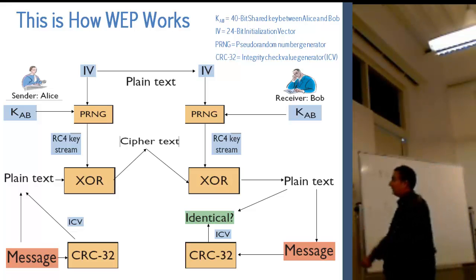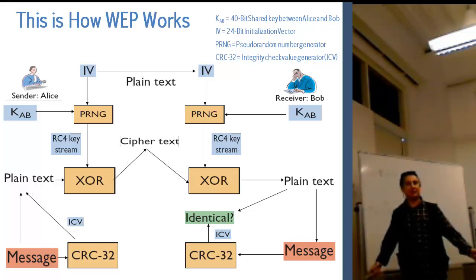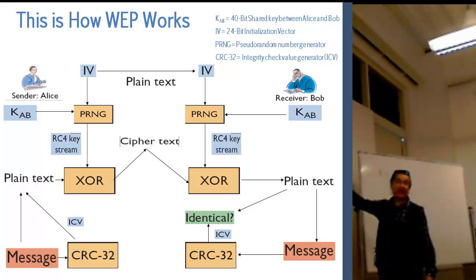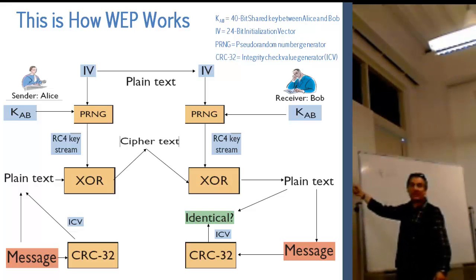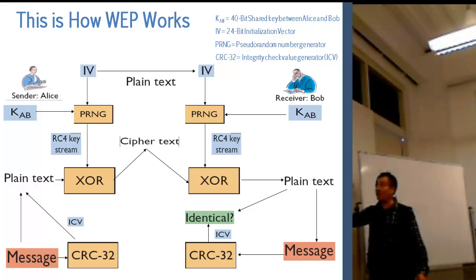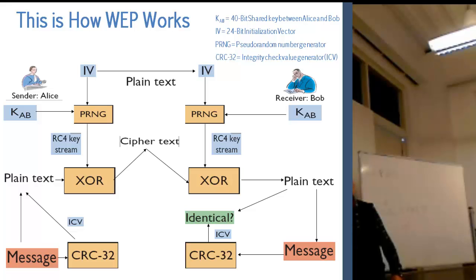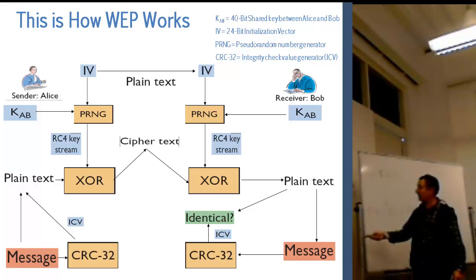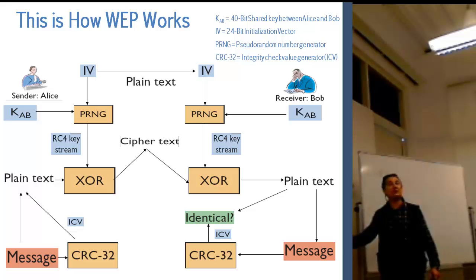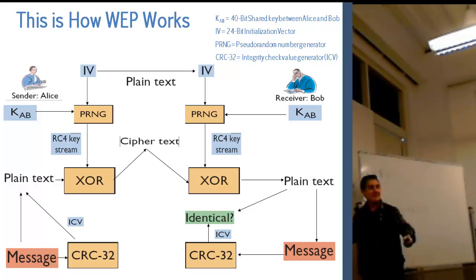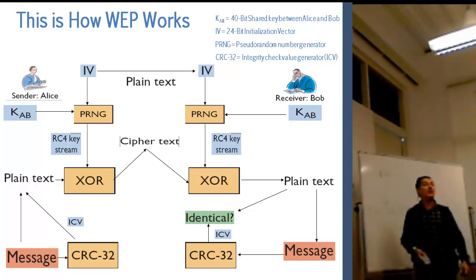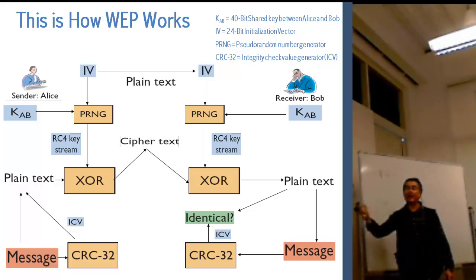The receiver gets the ciphertext. Using KAB and the IV recovered in clear form, Bob calls the RC4 pseudo-random number generator to generate the RC4 key stream, then XORs that with the ciphertext. The result is plaintext - message plus ICV. Bob then recalculates CRC32 over the message to get a new ICV. If the received ICV and the recalculated ICV are identical, there is no error; otherwise, the message is rejected.